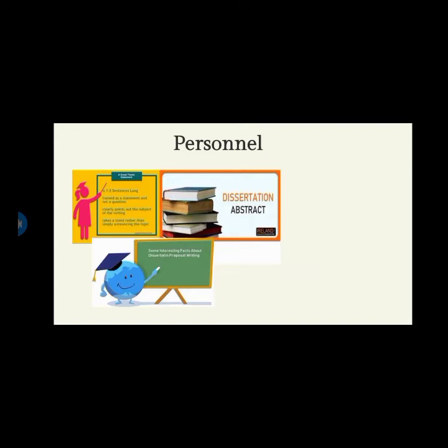Items in this section may include computer facilities, library resources, and survey research personnel and facilities. A section describing personnel to be employed in the study may be necessary for grant proposals or for projects involving a relatively large number of people. A personnel section is rarely needed for individual research projects such as dissertation research. Funding agencies often require the submission of a resume for the principal investigator. If a personnel section is included, it shall provide relevant background information about the research staff, emphasizing their qualifications and what they can contribute to the project.